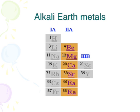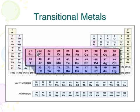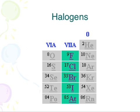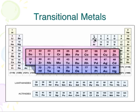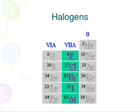Groups three through 12 are known as the transitional metals. Then, if we look at these groups — the boron group, carbon family, nitrogen family, oxygen family — those are just named after the first element of the group. But group 17 is known as the halogens.